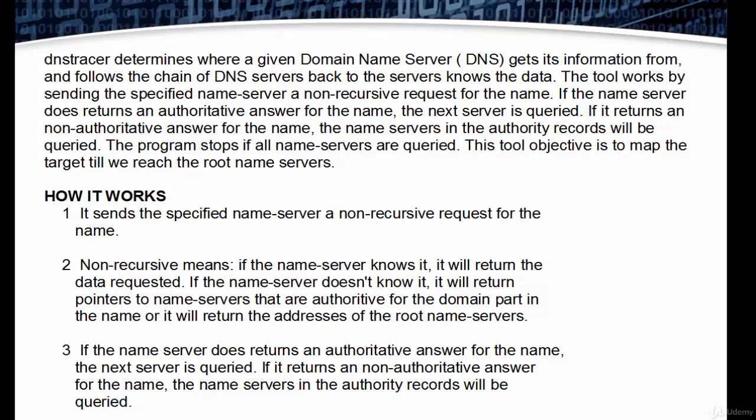The tool works by sending a specified name server a non-recursive request for the name. If the name server returns an authoritative answer, the next server is queried. If it returns a non-authoritative answer, the name servers in the authority records will be queried. The program stops if all the name servers are queried. This tool's objective is to map the target till you reach the root name servers.